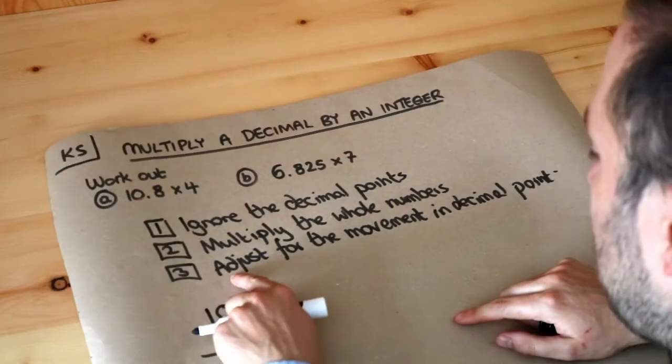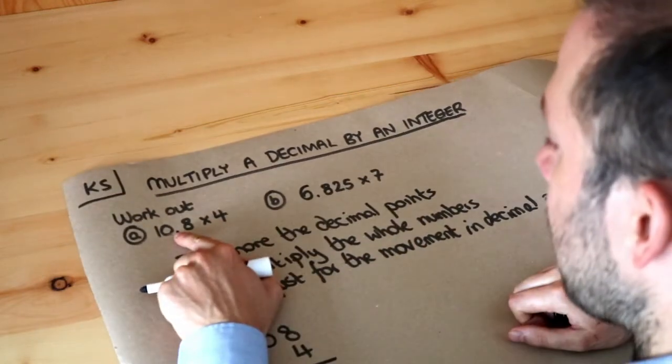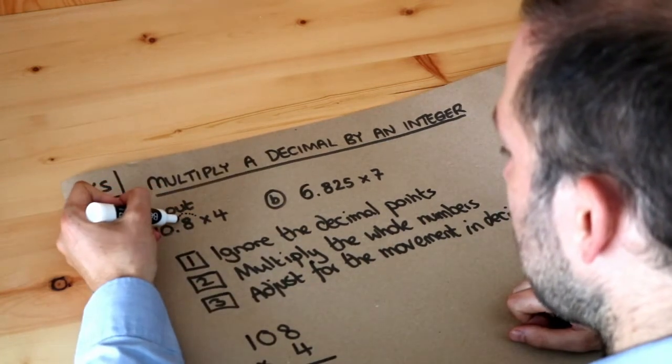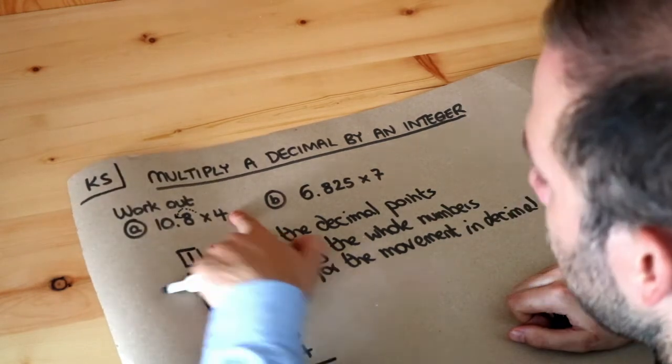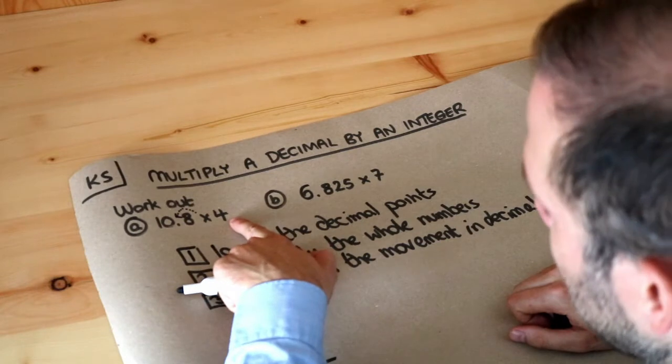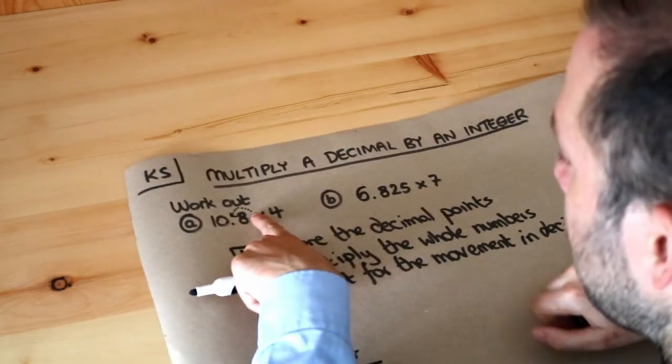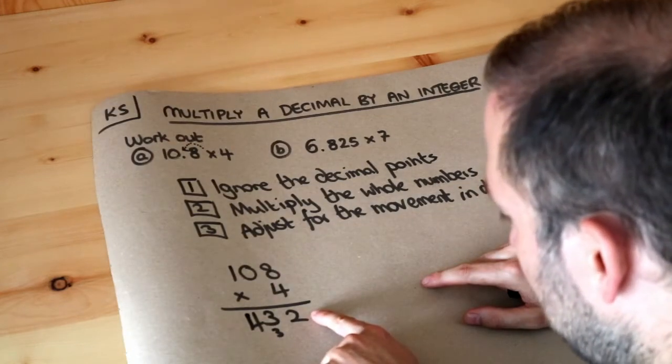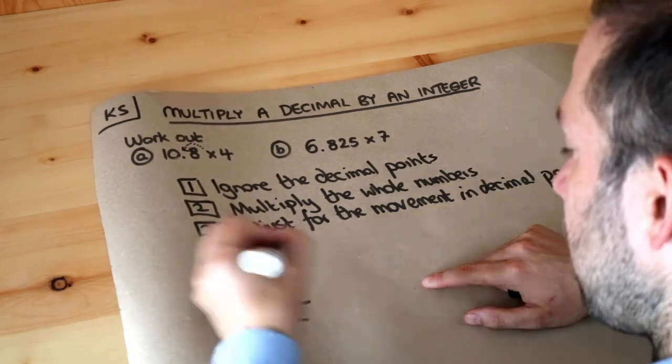Now the last part is to adjust for the movement in the decimal point. It wasn't 108, it was 10.8. We count from the end of the number how many places the decimal point moves. We had one decimal place move here. For the 4, we didn't have to change that number, so there's no movement there. In total, the decimal point moved once from the end of the number, so starting from the right we move the decimal point once. So we get 43.2 as the answer.